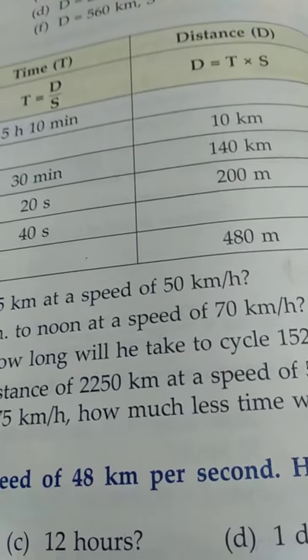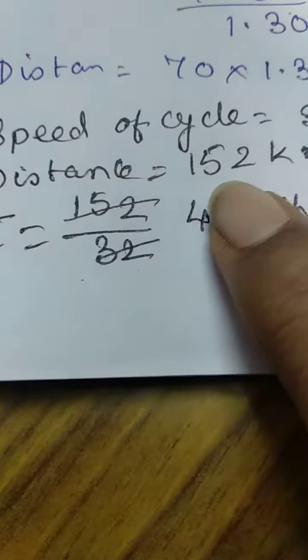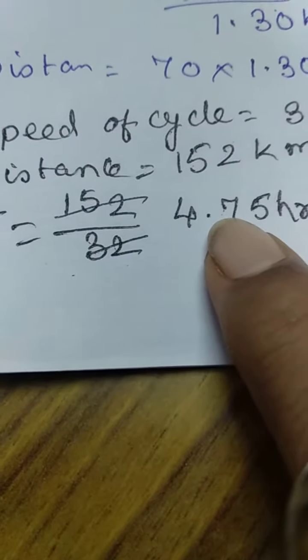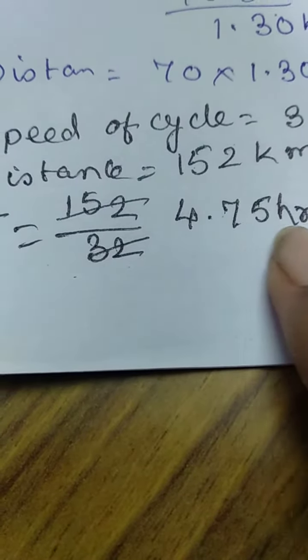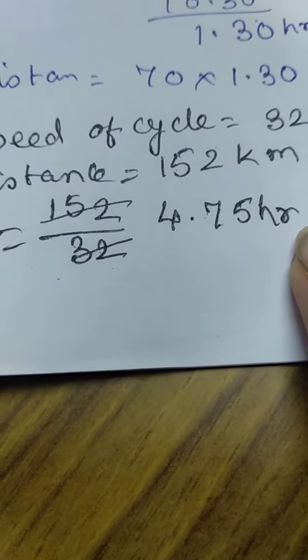So let's do it. Speed of the cycle is 32 km per hour and the distance is 152 km. So if we divide it, we get 4.75 hours. So this is our answer.